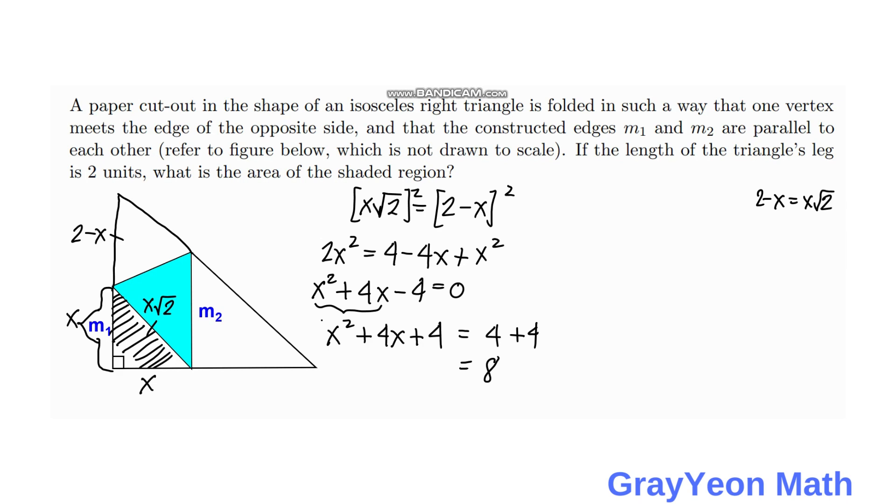So this x² plus 4x plus 4 can be written as (x plus 2)² since the squares are completed. Then we take the square root of both sides, then we have x plus 2 is equal to 2√2.